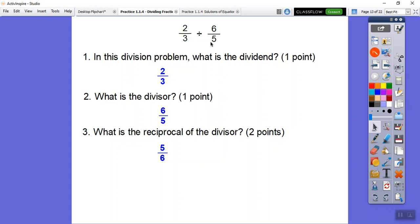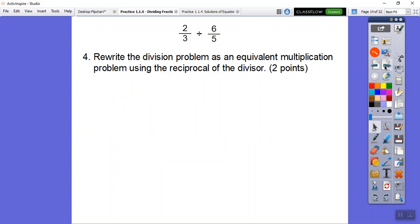Okay, now I'm gonna keep this problem here. Remember this is the dividend, this is the divisor, and the reciprocal is five-sixths. I'm going to put number four right here. Number four says rewrite this division problem as an equivalent multiplication problem using the reciprocal of the divisor. Now if you've never done this before, this makes no sense. But if you have, it'll be a ringing memory bell. So this is what we do: the first fraction divided by the second fraction equals the first fraction times the reciprocal of the second fraction.